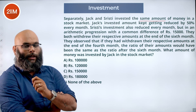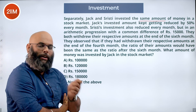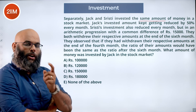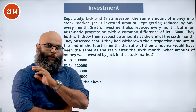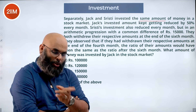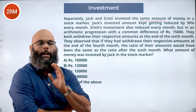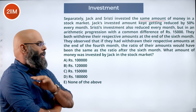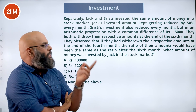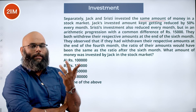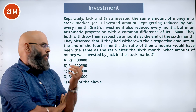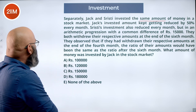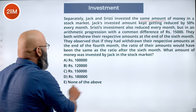So they withdraw after the sixth month and realize that if they had withdrawn after four months, the ratio still would have been the same. The question is: what is the amount invested by Jack? Jack and Srishti have invested the same amount, so we need to find both values.